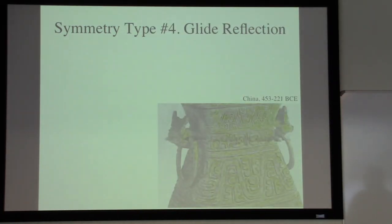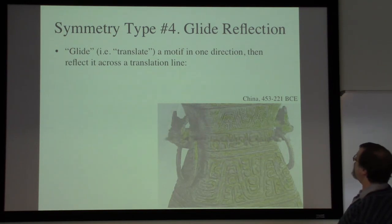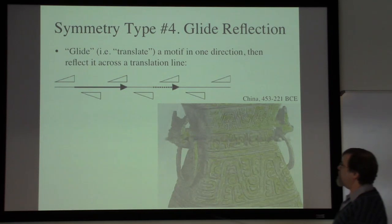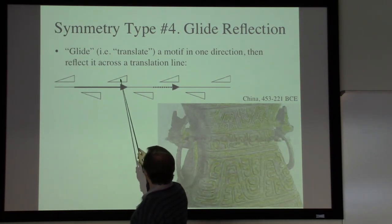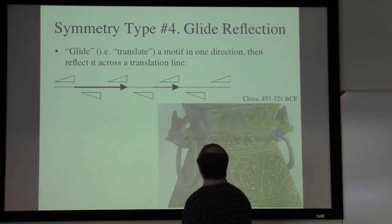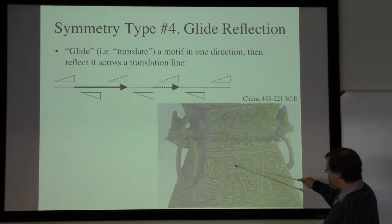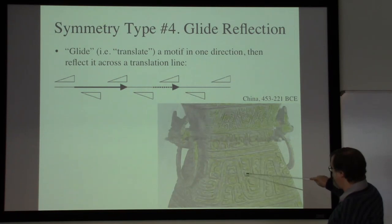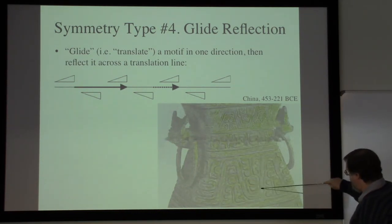The final and possibly hardest kind of symmetry to see is the glide reflection. In a glide reflection, you glide or translate a motif in a particular direction and then reflect it across a line. Schematically: take a triangle, slide it over, flip it across the line; slide and flip again repeatedly. Looking at this Chinese bronze, a motif slides over and flips so the mountain part becomes a valley, then slides and flips again so the valley becomes a mountain.